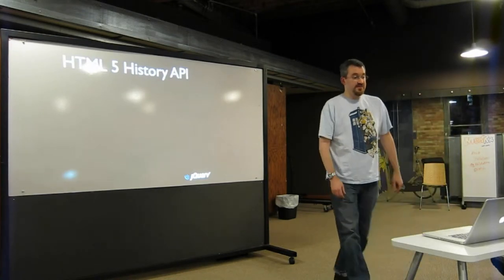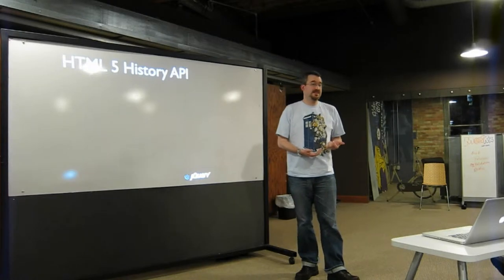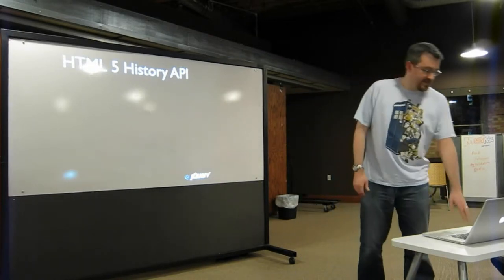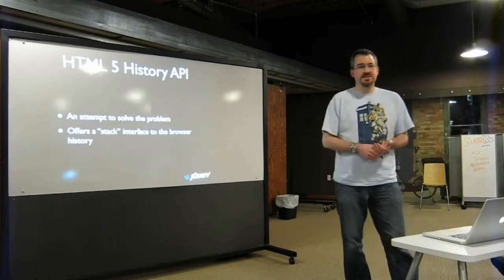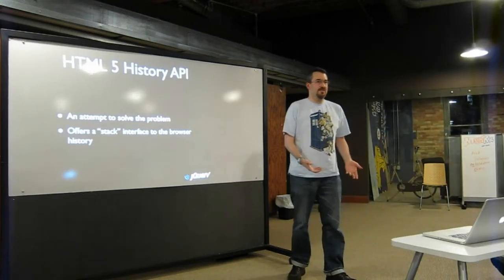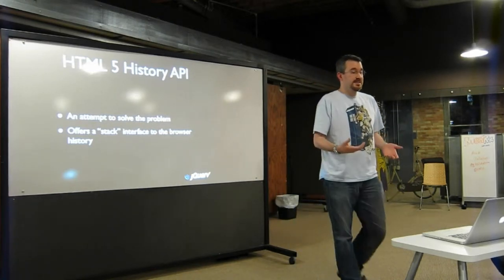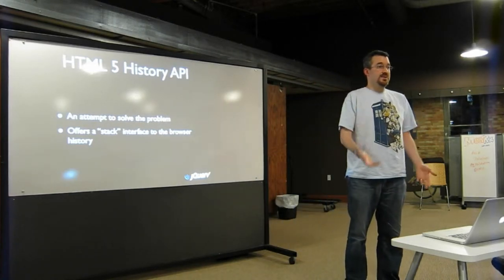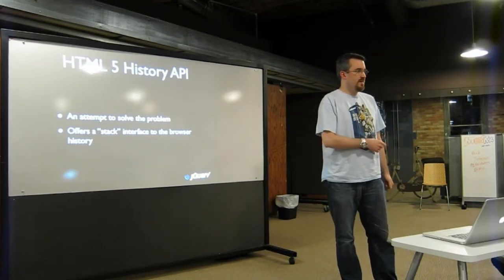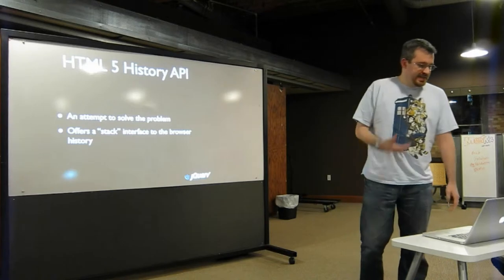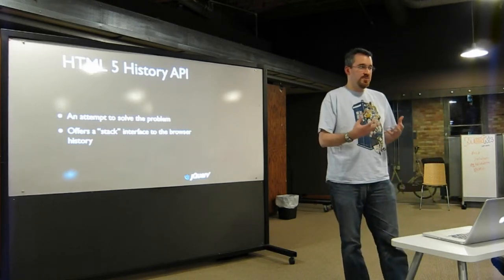In HTML5, there is an API to deal with some of these issues. It's called the History API. What it gives you is a stack, basically, of information about the page. There's already a stack in the browser history — you're pushing a page onto the stack, popping it off with the back button. But what this API allows you to do is add things to that stack that aren't really pages.